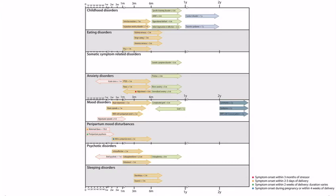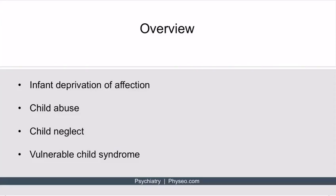This is the psychiatry overview figure, which will appear in most of the lectures within psychiatry. It's useful because it shows the timing and duration of most psychiatric illnesses. In this lecture, we'll be focused on child abuse and neglect, starting with infant deprivation of affection. This slide lists the four conditions we're going to discuss: infant deprivation of affection, child abuse, child neglect, and vulnerable child syndrome.